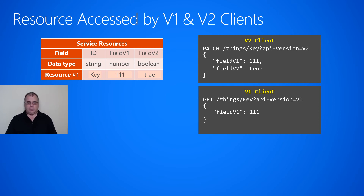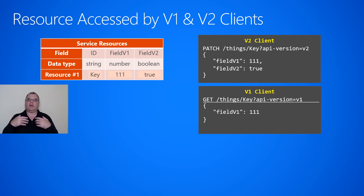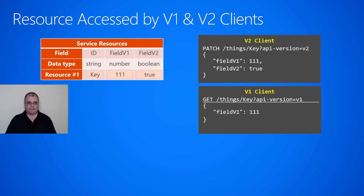Now let's say a version 1 client wants to read this. It goes to the things collection with the same key, but passes API version equals v1. The service knows this is a v1 client and should only return things that a v1 client would know and understand — it should not return field v2, because the v1 client wouldn't know about that. The service responds with field v1 equal to 1111, and field v2 is filtered out since the service should not give it back to a v1 client.